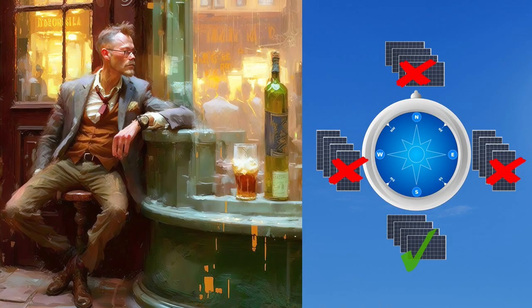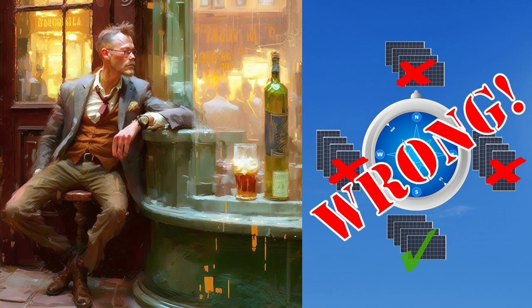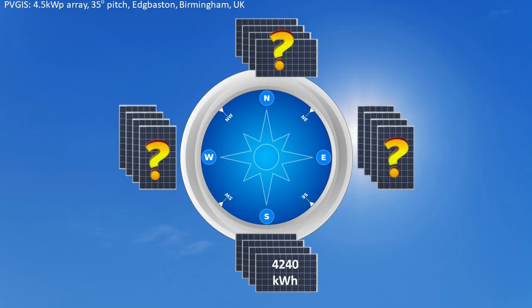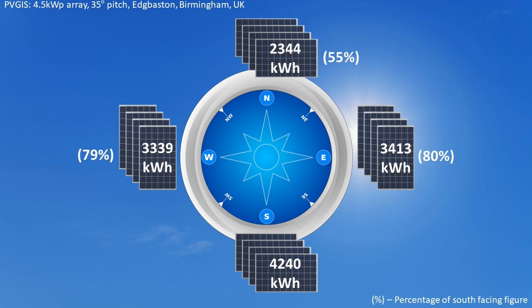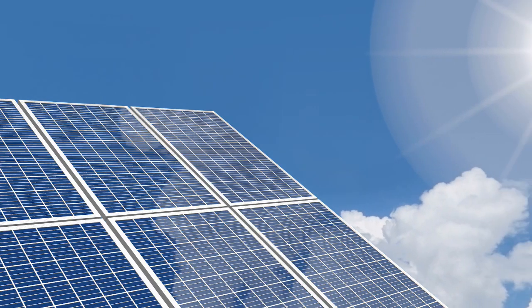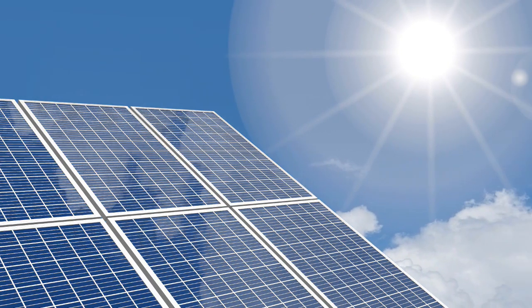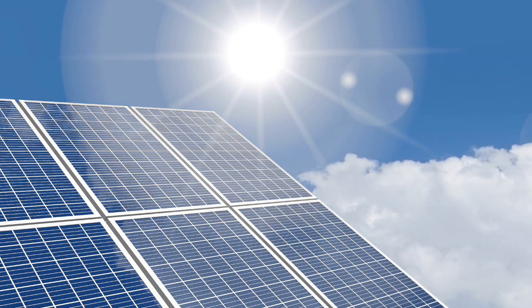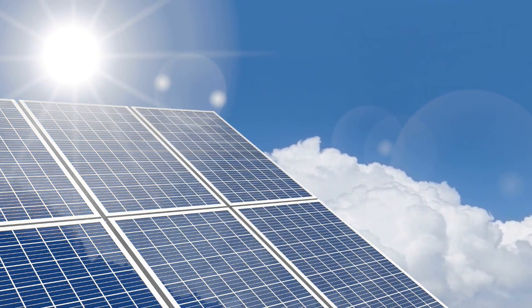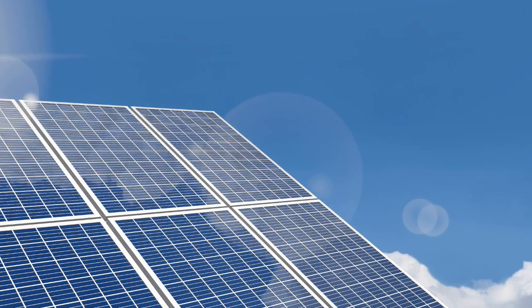It's still quite common to hear people say that solar panels only make sense if you have a south facing roof. But whilst it's true that south facing panels will generate the most energy, east, west or even north facing panels can still generate significant amounts of electricity. As well as determining how much energy they'll produce, the direction that your panels face will also dictate what time of day they'll generate the most.